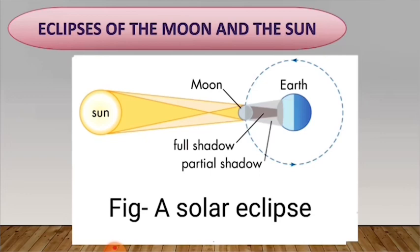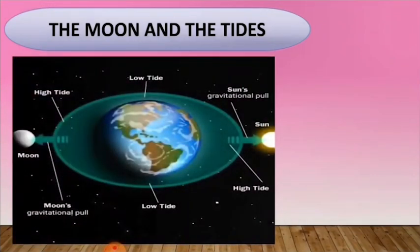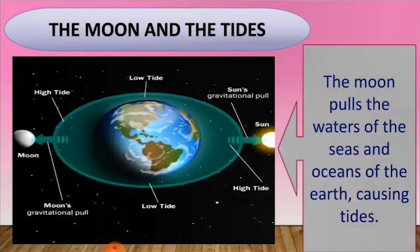Now next, we will see the moon and the tides. Although the moon's gravity is very weak, it has a noticeable effect on the Earth. It pulls the water of the seas and oceans of the Earth, causing tides. Since the moon is closer to the Earth than the sun, the moon's pull on the water is stronger than the sun.